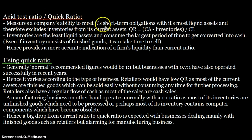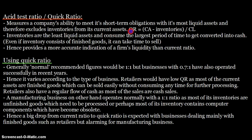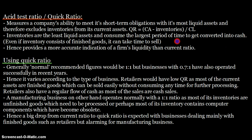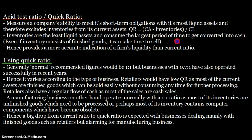The acid test ratio measures a company's ability to meet its short-term obligations with its most liquid assets, and therefore excludes inventories from current assets. The formula is: quick ratio equals current assets minus inventories, divided by current liabilities. Inventories are excluded because they are the least liquid assets and take the longest time to be converted into cash. Even finished goods inventory can take time to sell.